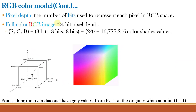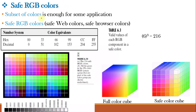The number of bits used to represent each pixel in RGB space is called pixel depth. A full color or true color RGB image has a 24-bit pixel depth, where each color has 8 bits, giving 8×3 = 24. An 8-bit image has 2⁸ = 256 different values, and therefore an RGB image has 256×256×256 = 16,777,216 color shade values, or approximately 17 million different color values.